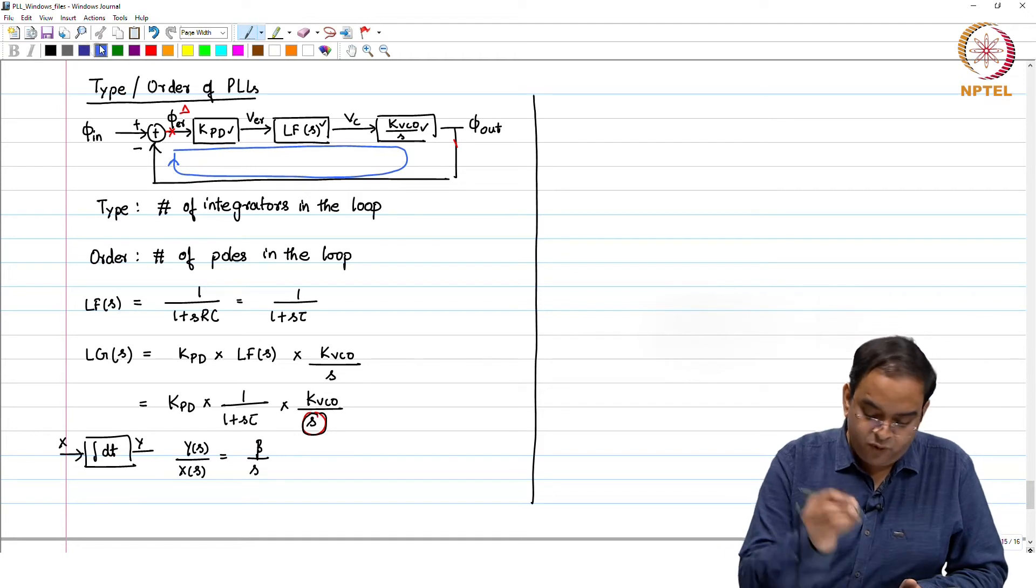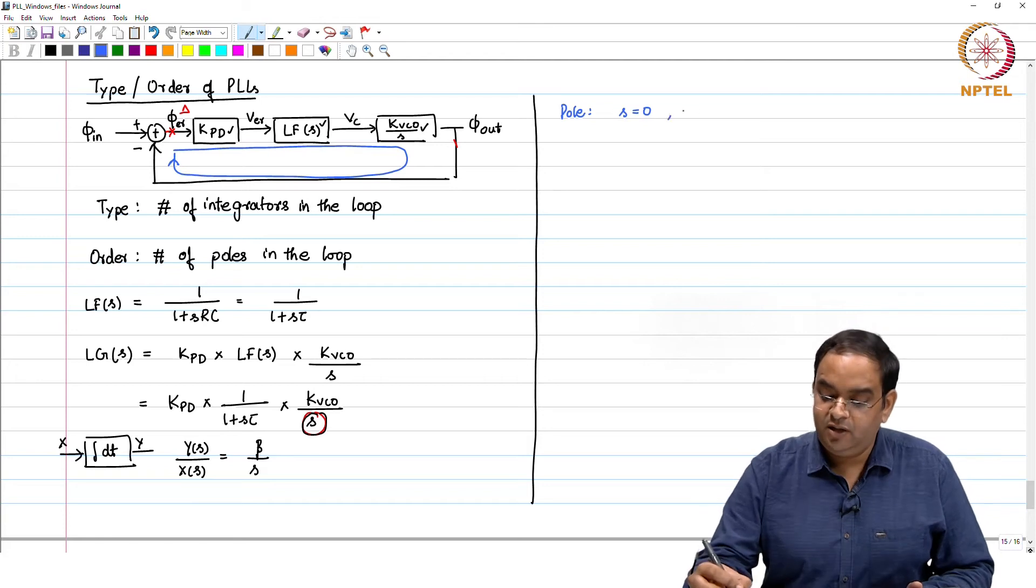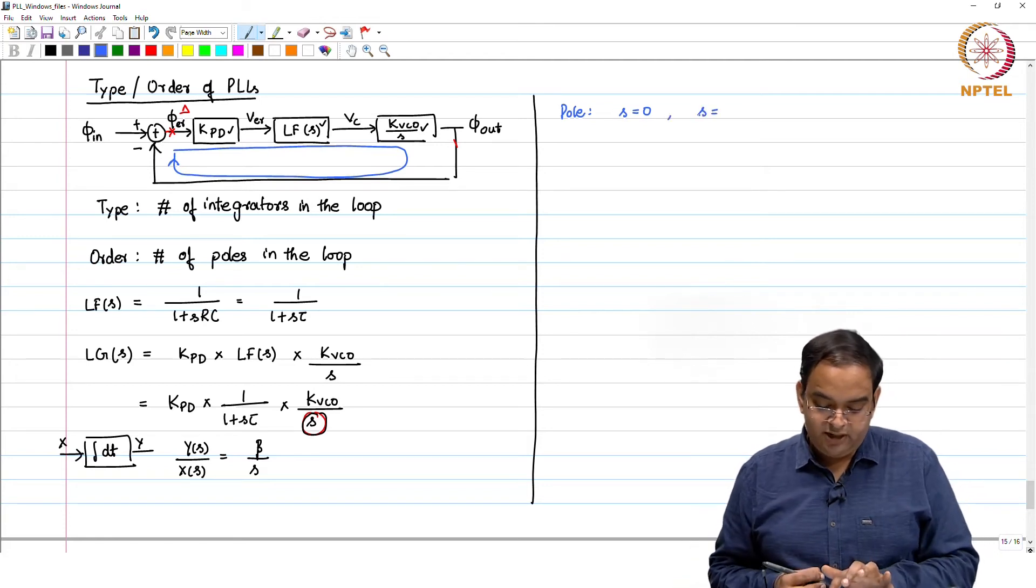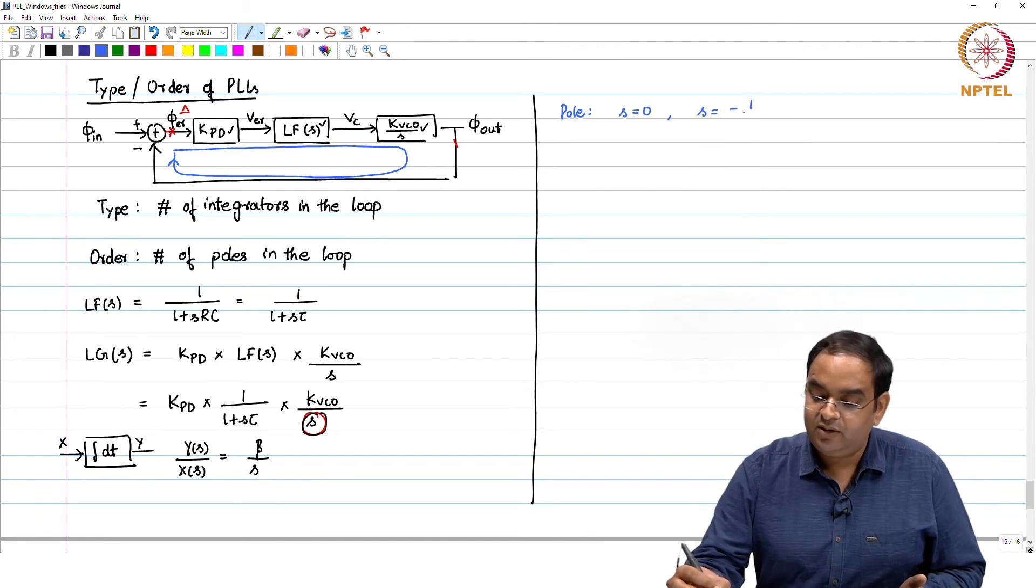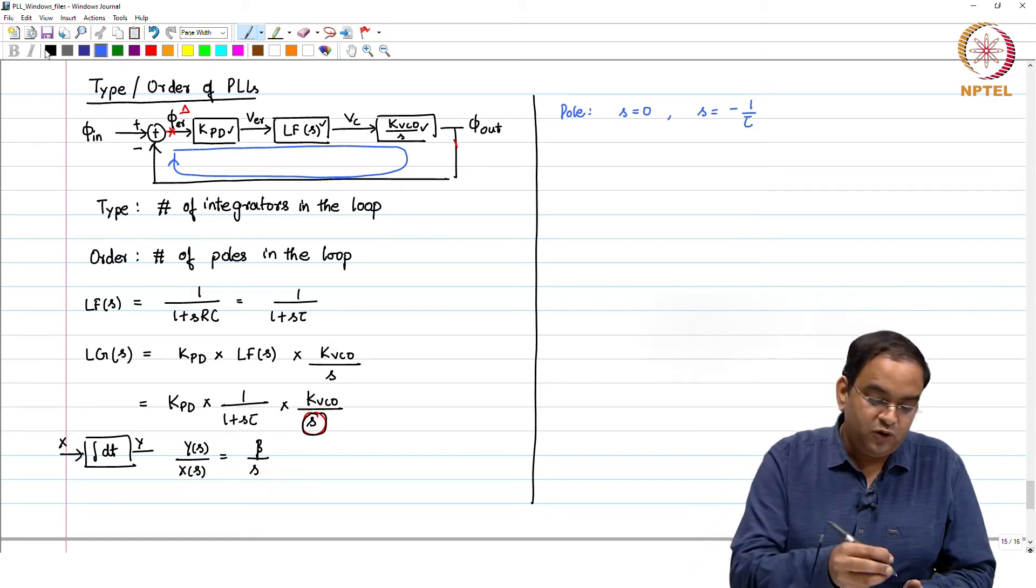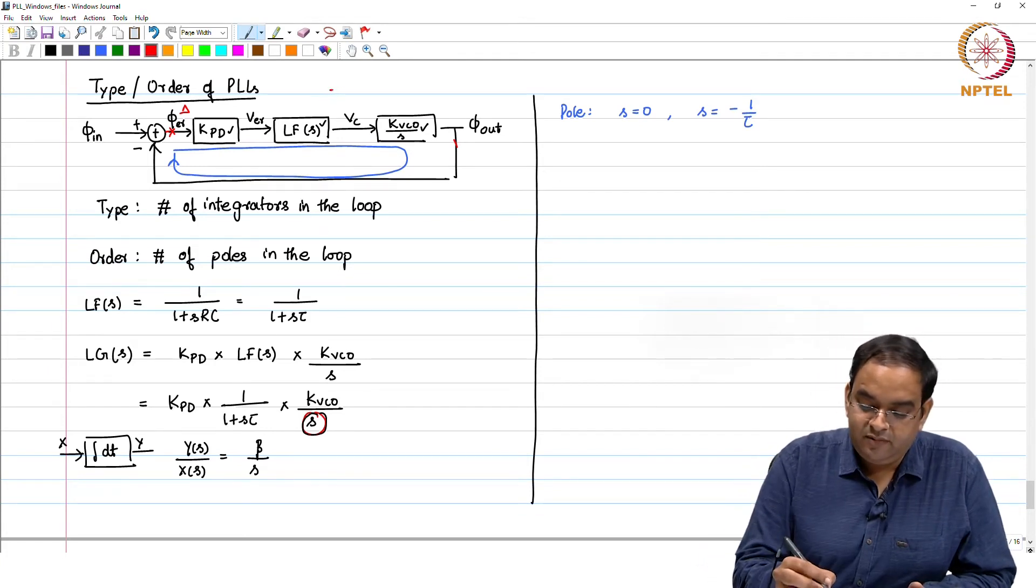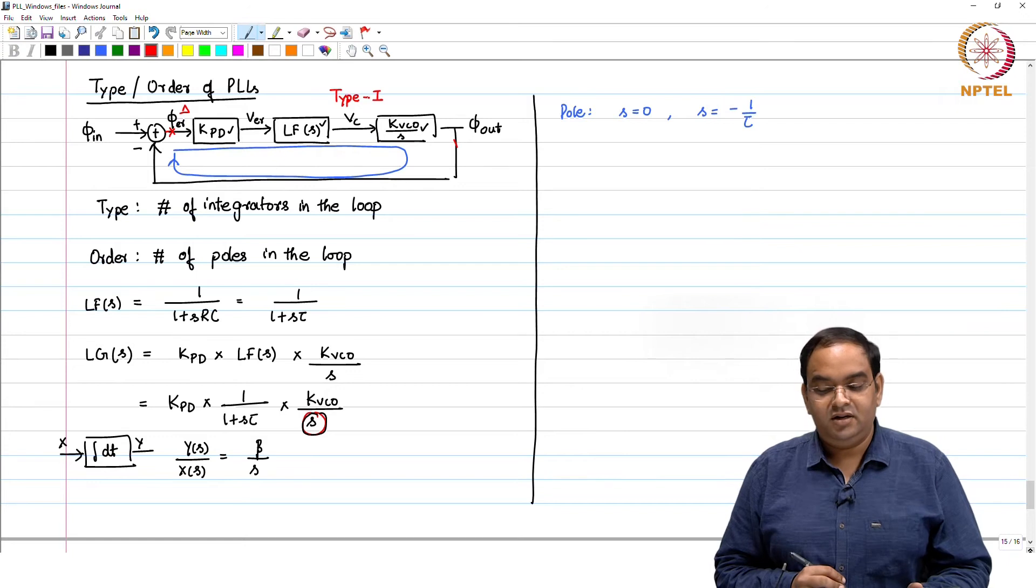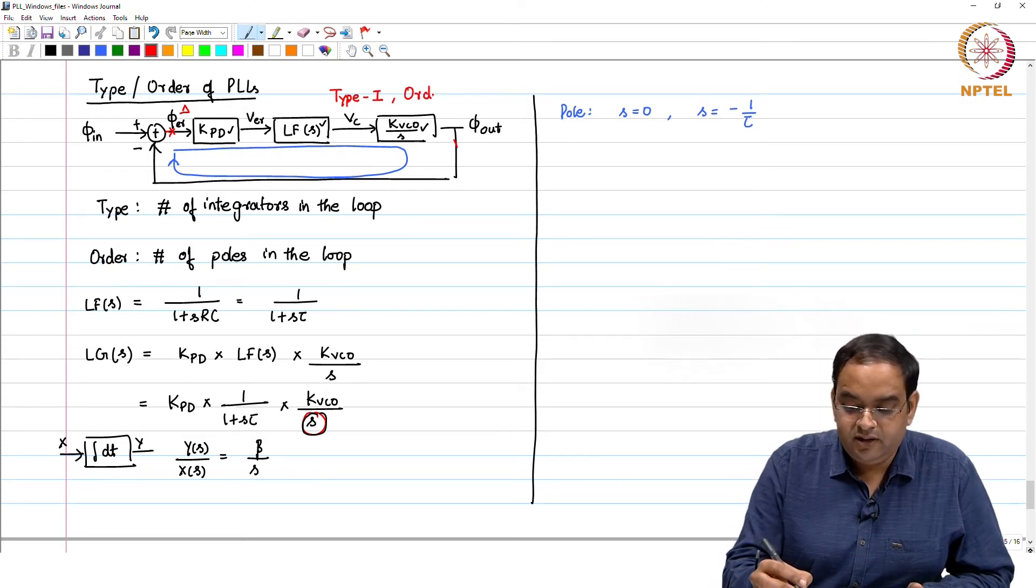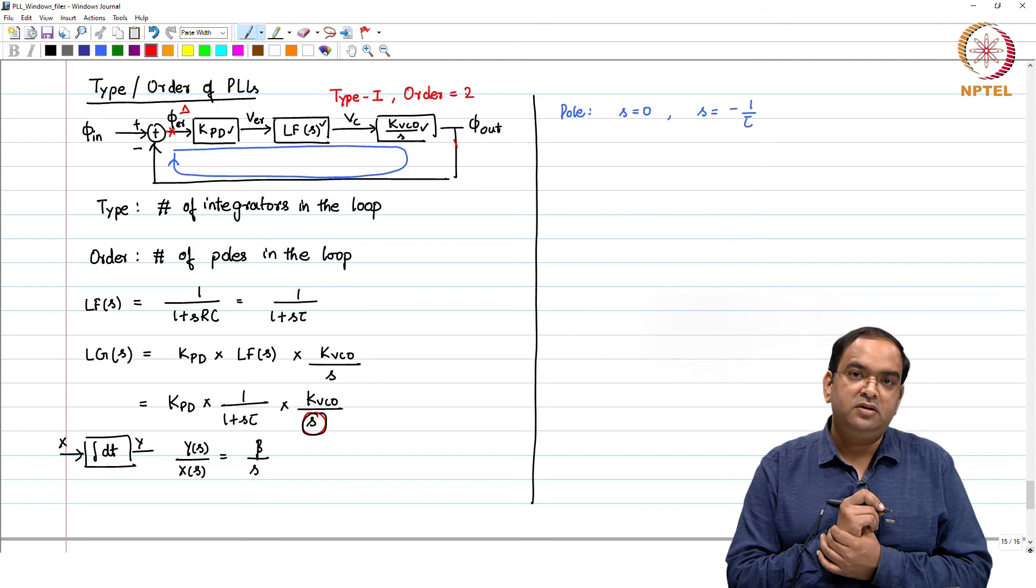Then how many poles do we have in this case? One pole is at S equal to 0 and other pole is at, if you look at it, 1 plus S tau, the other pole is at minus 1 over tau, it is a left half plane pole. There are two poles in the system and one integrator. This PLL will be called as type 1, it is normally written in Roman, and order is 2. The PLL which we have seen is type 1 and order 2.